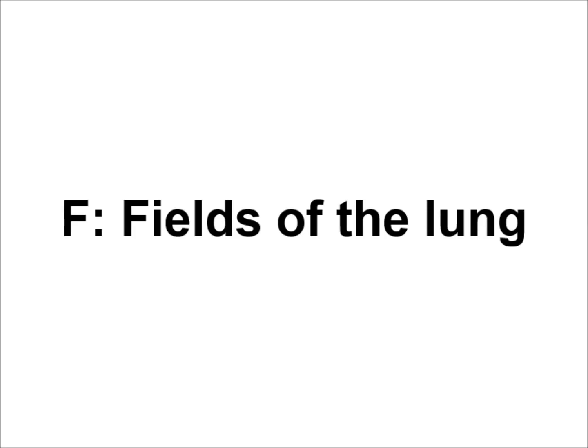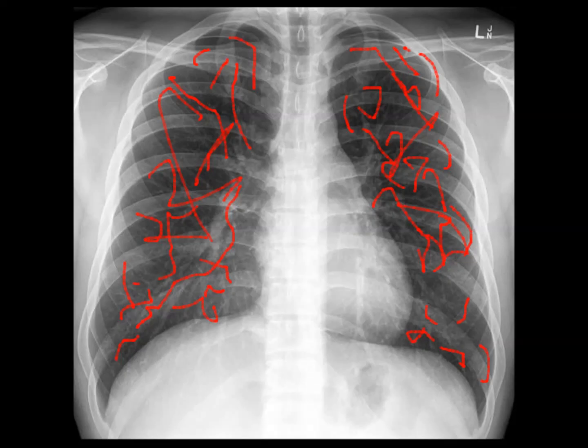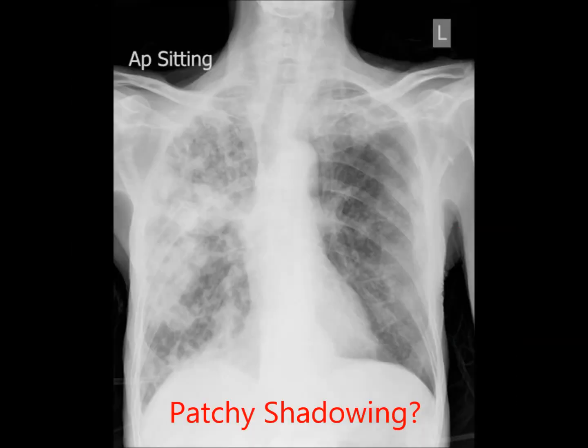F is the fields of the lung. Normal lung fields are roughly symmetrical and have faintly fuzzy lung markings throughout, representing normal vascular and lung soft tissue. When describing the lung fields, there is no correct terminology, as long as what you say effectively communicates what you're trying to describe. For example, you could describe what you see as patchy shadowing, widespread areas of increased density, multifocal opacification, or even a load of white fuzz that probably shouldn't be there.